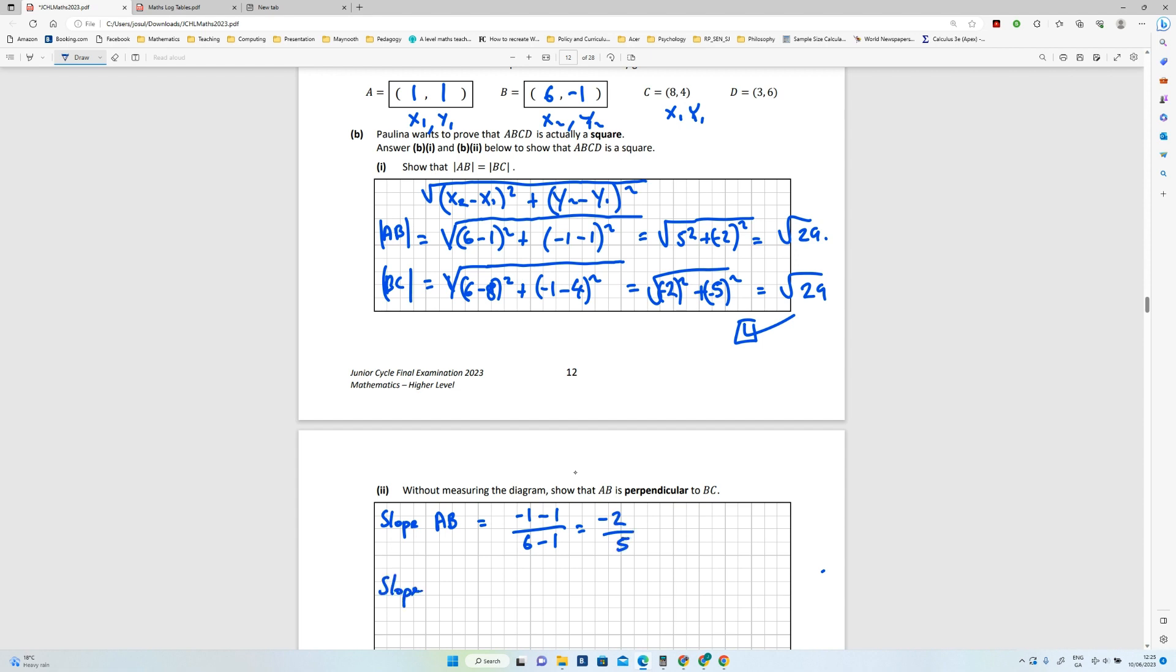Slope of BC then is (-1 - 4) and this is 6 minus 8. So that's going to give me minus 5 over minus 2, which is actually 5 over 2. Okay.